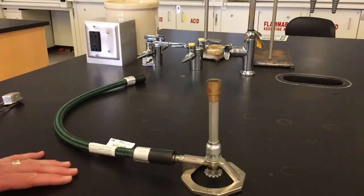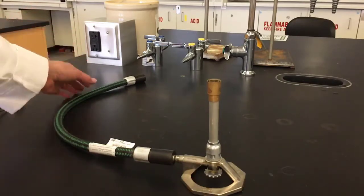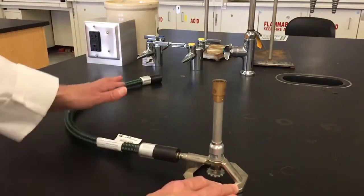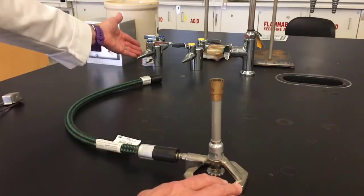In this video we are going to show you how to light a Bunsen burner. Here we have a hose connected to our Bunsen burner. That's where the fuel is going to travel from the gas jet.